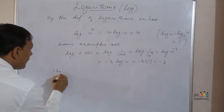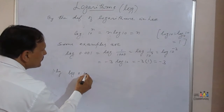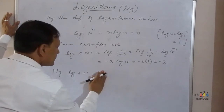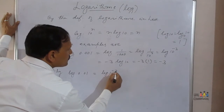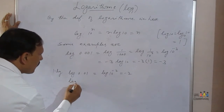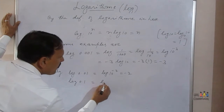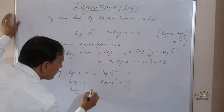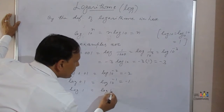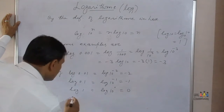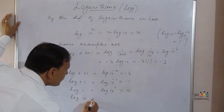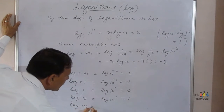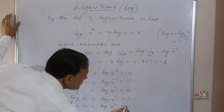Similarly, log of 0.01 can be written as log of 10^(−2), which equals −2. Log of 0.1 can be written as log of 10^(−1), which equals −1. Log of 1 equals log of 10^0, which equals 0. Log of 10 equals log of 10^1, which equals 1. Log of 100 equals log of 10^2, which equals 2.